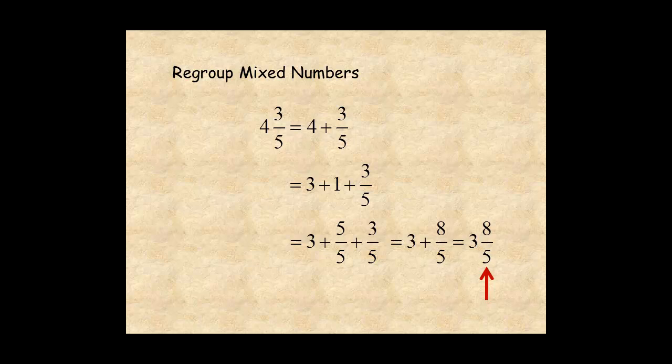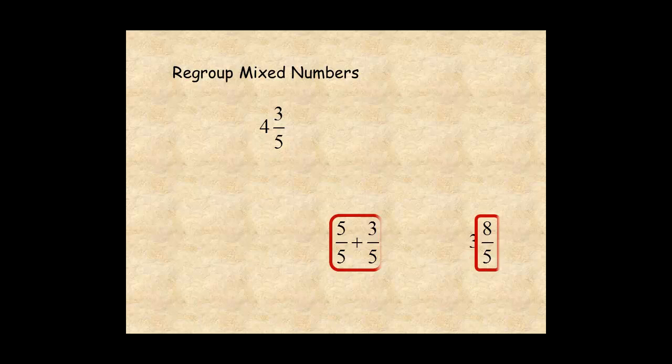Before looking at the mental math shortcut, copy this example and make sure you understand each step. In this example, you subtract 1 from the whole number and add 1 written as 5 over 5 to the fraction.